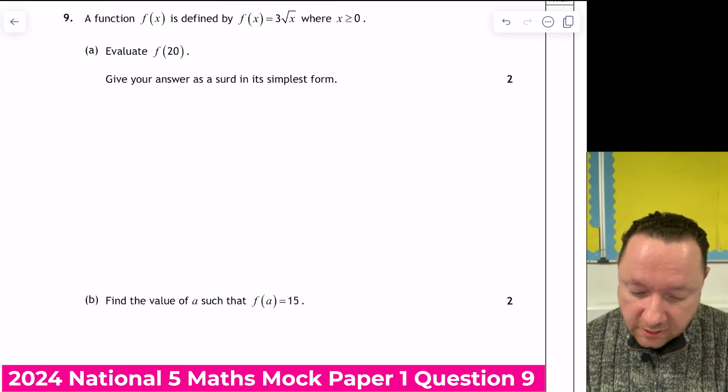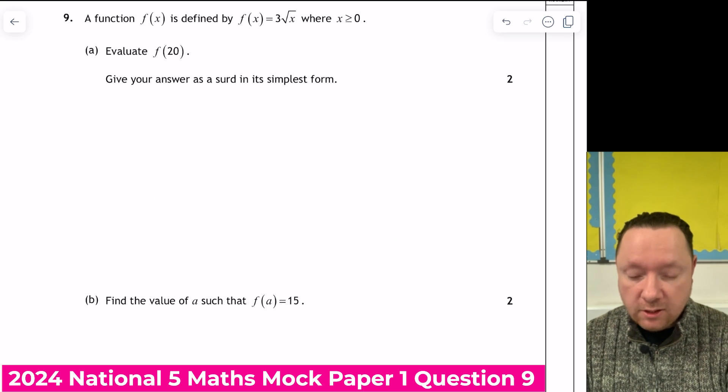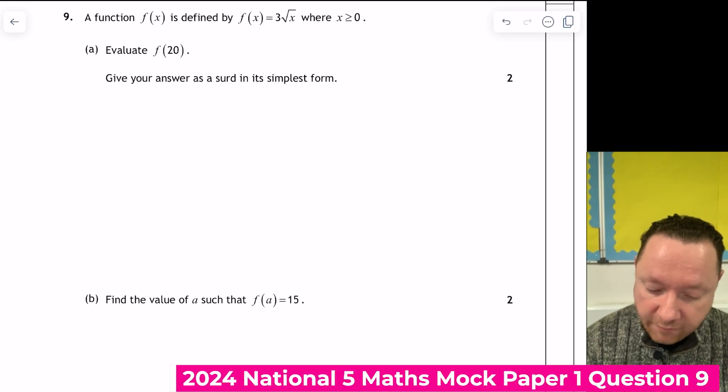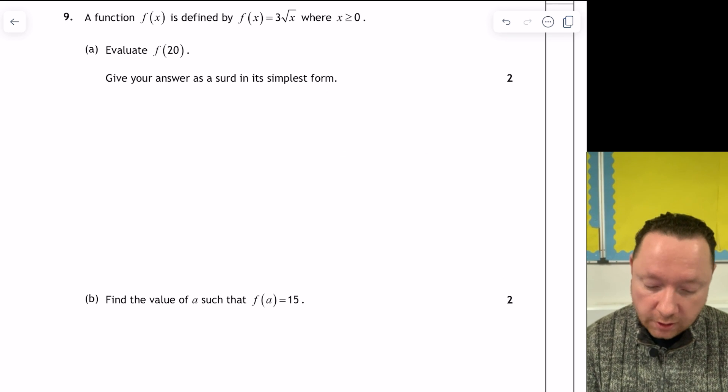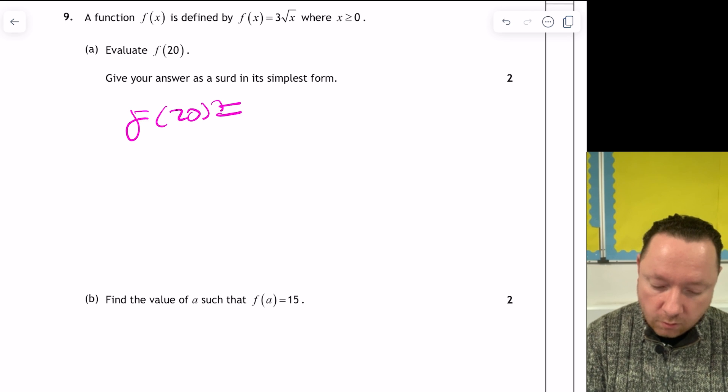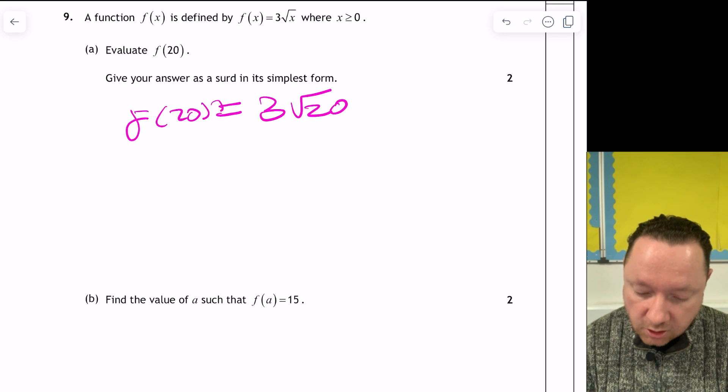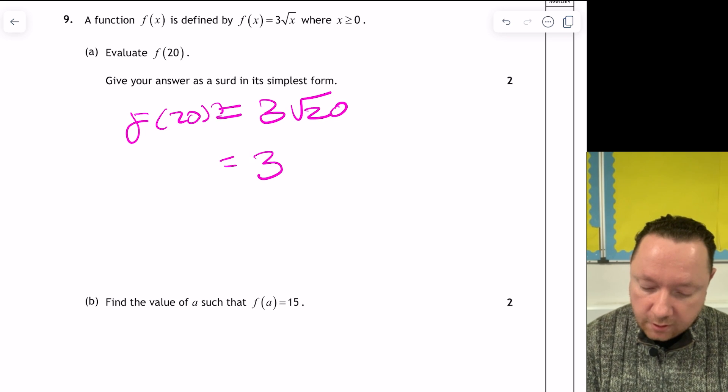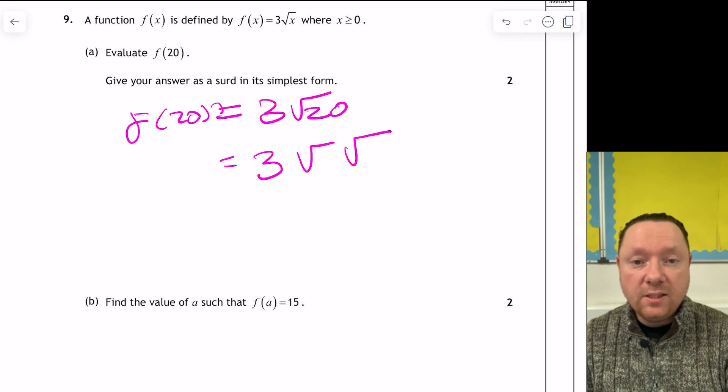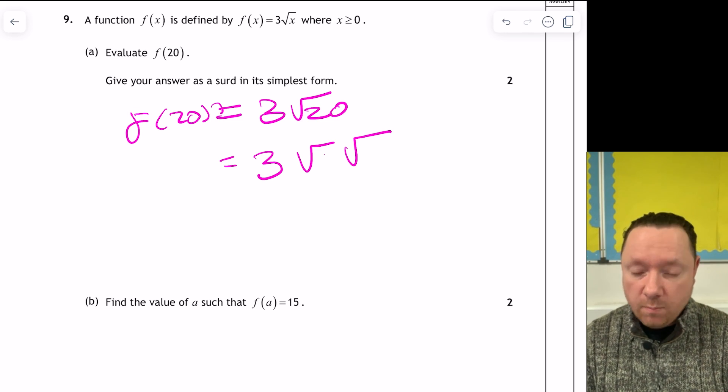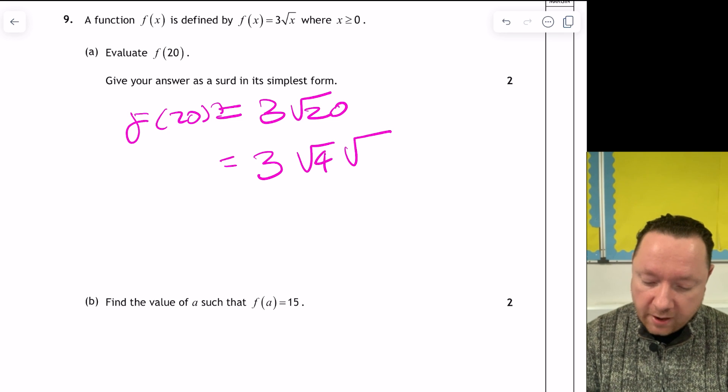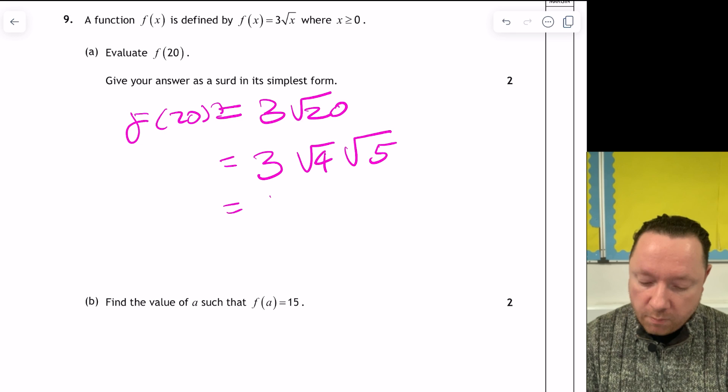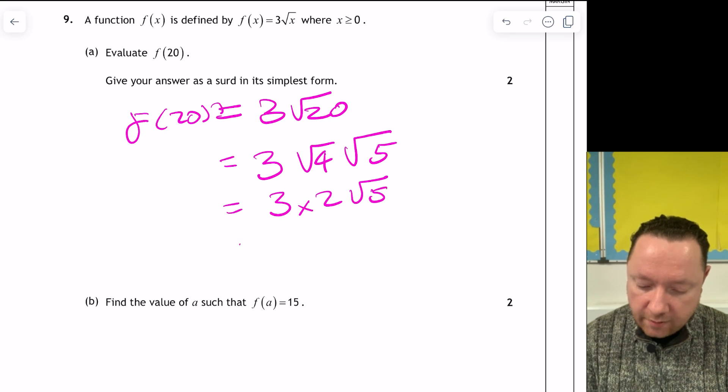Question 9. A function f of x is defined as f of x is 3 root x, where x is greater than or equal to 0. Find f of 20. So 20 is in the brackets, so it's substitution. So f of 20 equals 3 root 20 is your first step. It says give your answer as a surd in its simplest form. So that's 3 root root. Simplifying a surd, two numbers that times to make 20. The biggest one is a square number. So it's 4 and 5. 4 is the biggest square number. I'd multiply root 4, so that is 2 times root 5. And I can multiply the 3 and the 2 as 6 root 5.